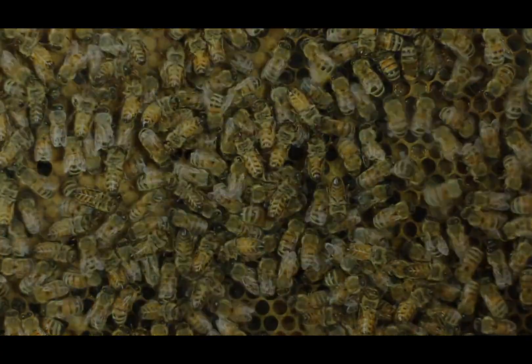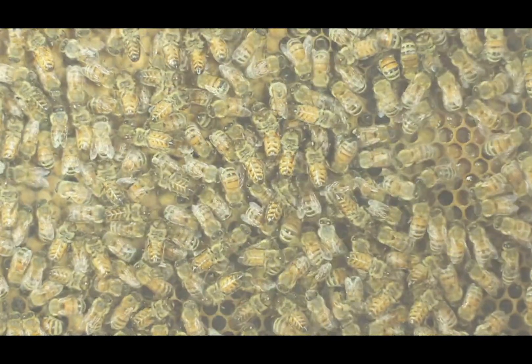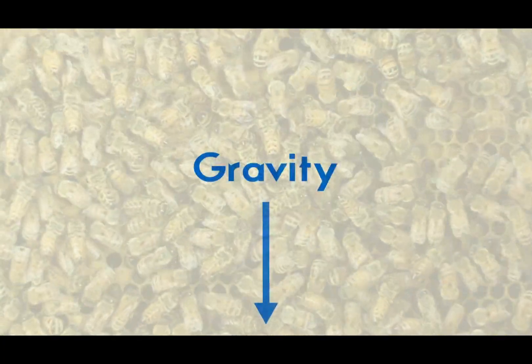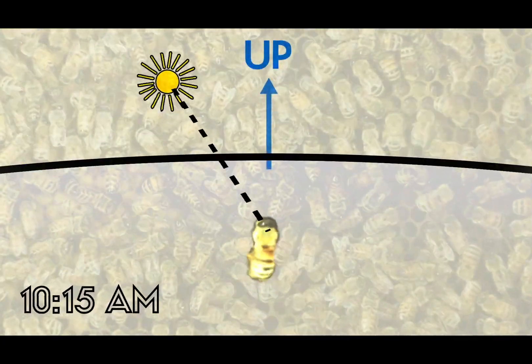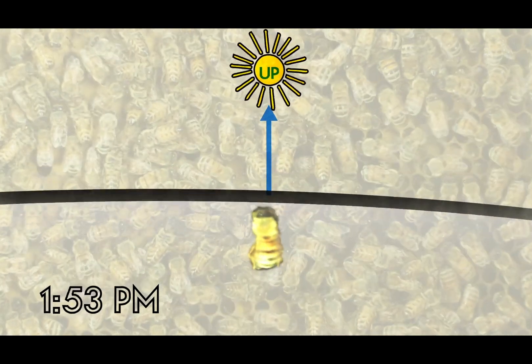Inside of a dark vertically oriented beehive, the natural shared reference point is gravity. By pairing these two global constants, the bees form a simple language.